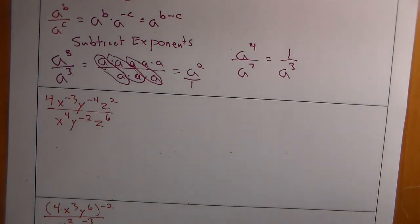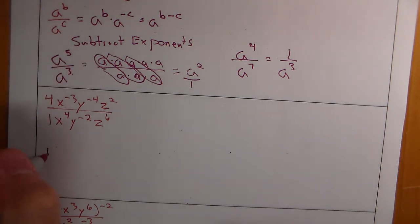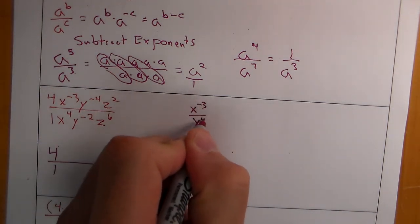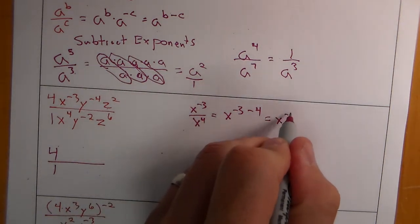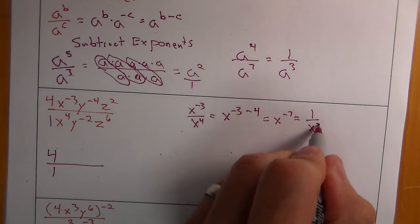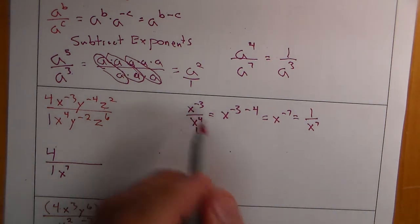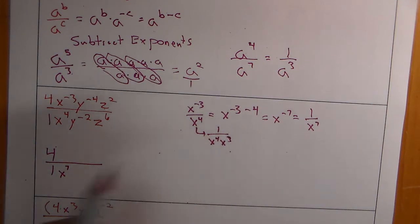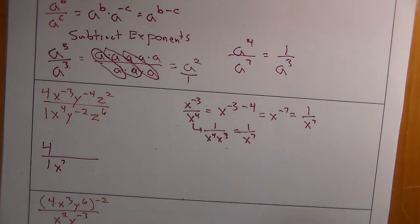In the first example, we look at coefficients: 4 over 1 simplifies to just 4 over 1. For the x terms, x to the negative third over x to the fourth: we can write this as negative 3 minus 4, which gives x to the negative 7. Following the negative exponent rule, that becomes 1 over x to the seventh. Alternatively, move the negative 3 down to make it positive, giving x to the fourth times x to the positive 3 in the denominator — same result: 1 over x to the seventh.